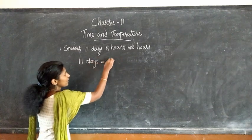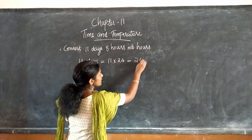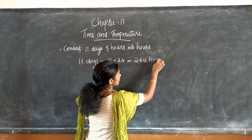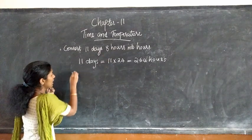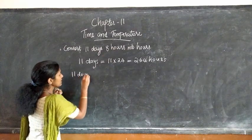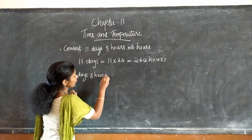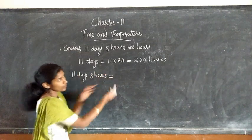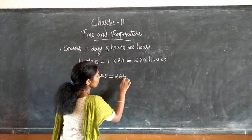Simply, we have to multiply the number of days by 24. The next question: convert 11 days 8 hours into hours. Here, one difference is we have 11 days 8 hours to convert into hours. First, we can convert 11 days into hours. 11 days equal to 11 into 24, that is equal to 264 hours.